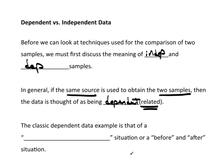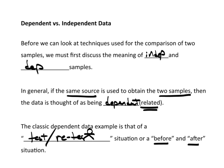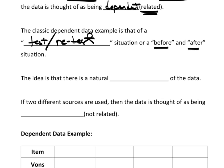Now, the classic dependent data example is that of a test-retest situation, very commonly referred to as a before and after situation. So you test a group of people, and then you have some type of intervention. And then after the intervention, you retest to see if the intervention had a positive or negative effect. Hence, the before and after idea.